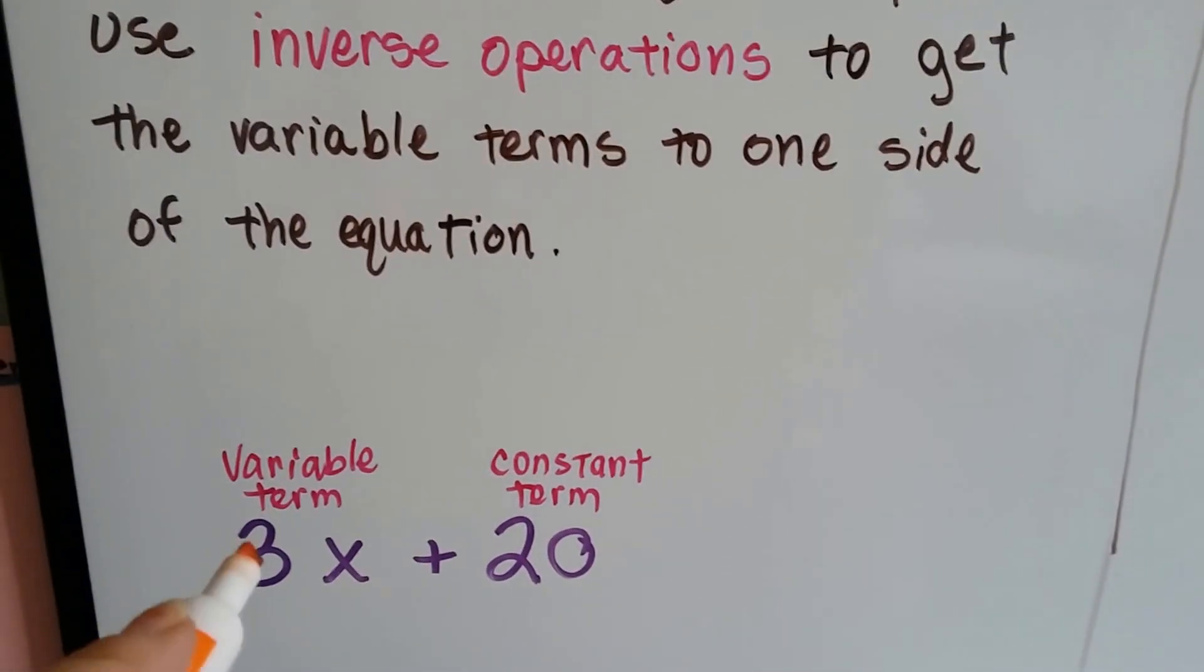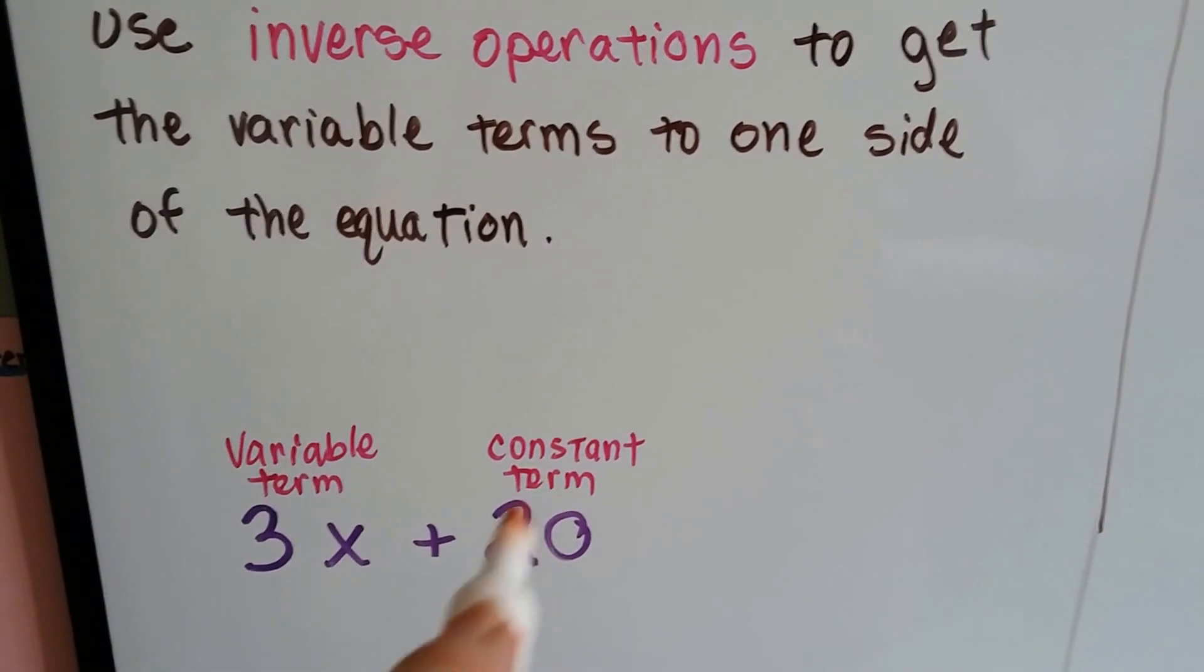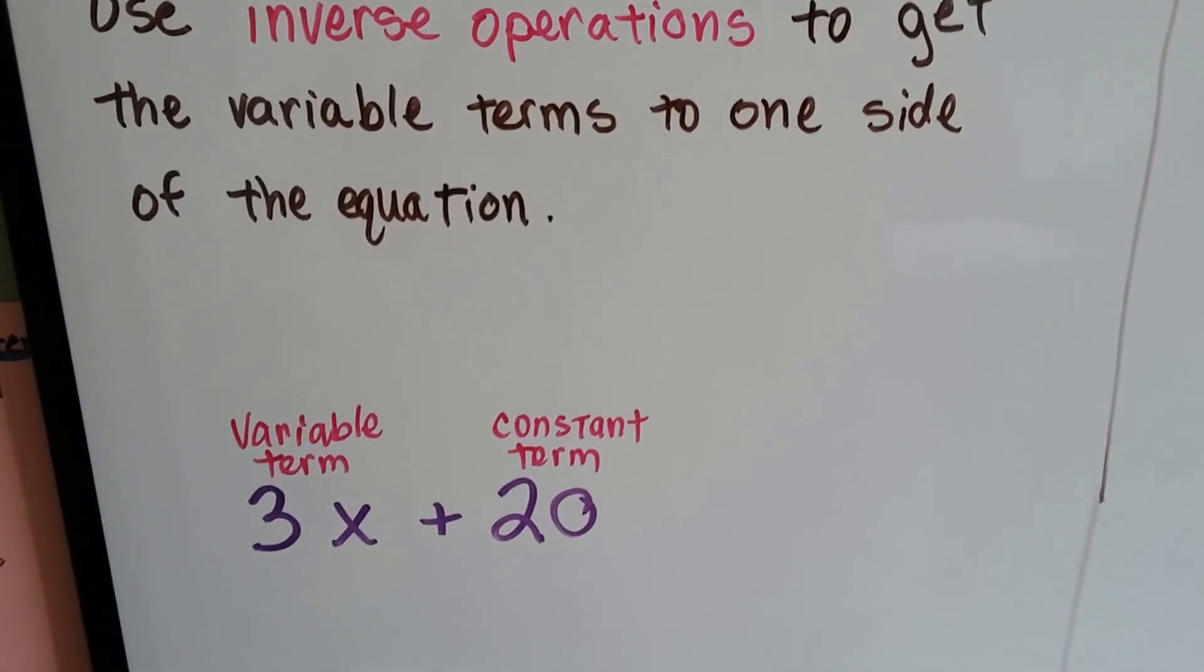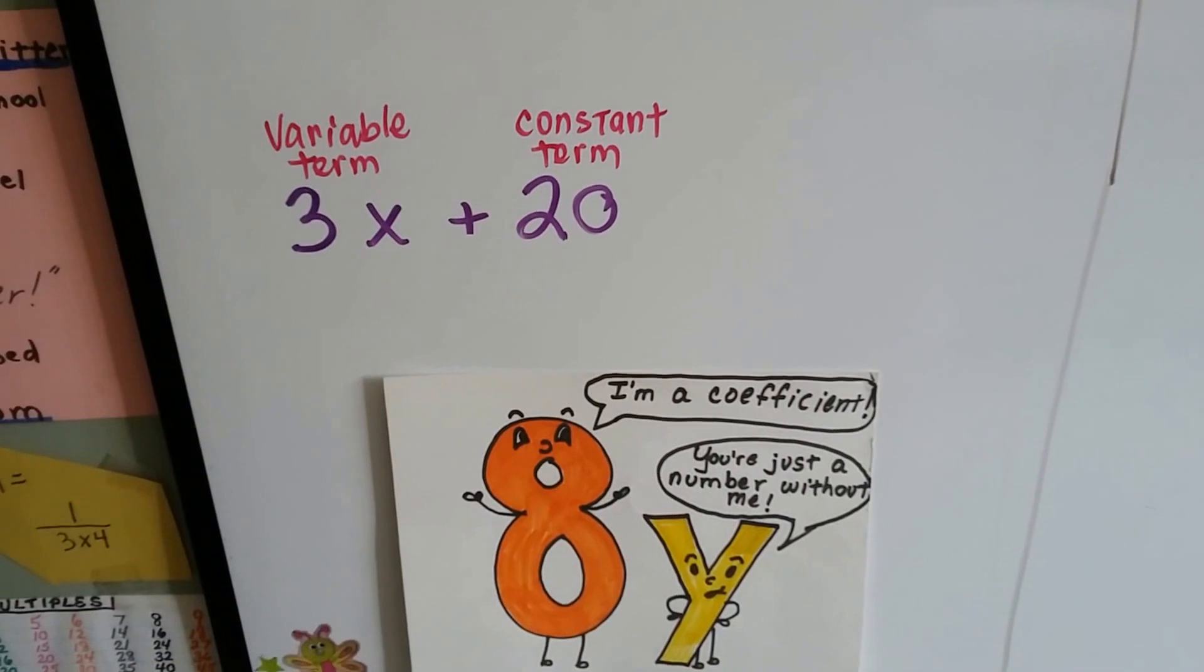A variable term is like the 3x here, and a constant term would be like just a flat number that's being added or subtracted. Remember that the 3 in front of the x is a coefficient, and that's the variable.